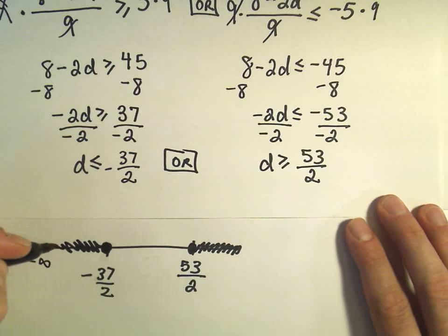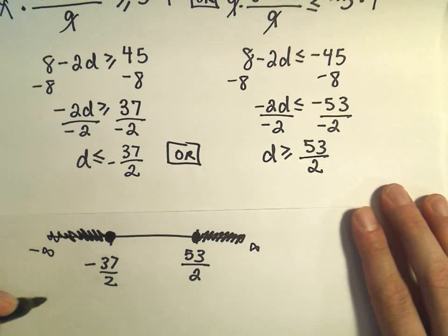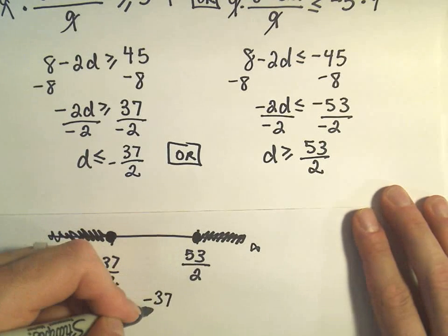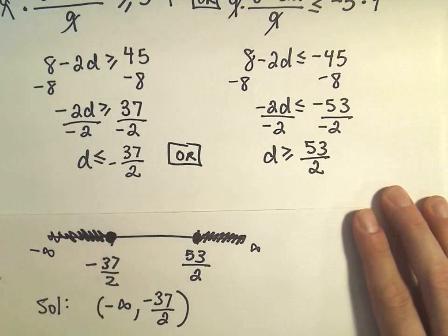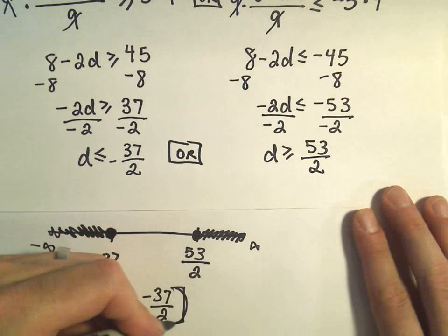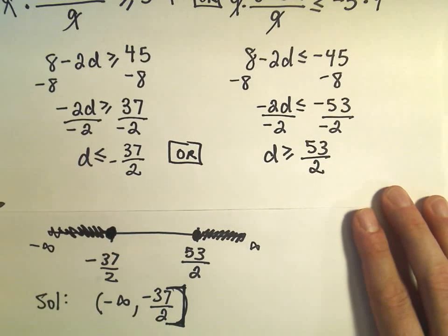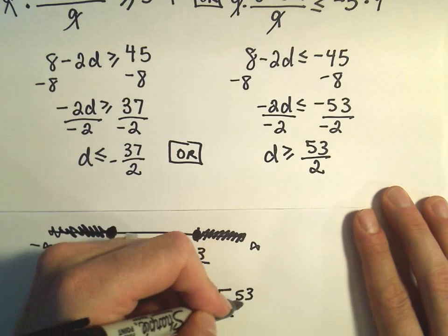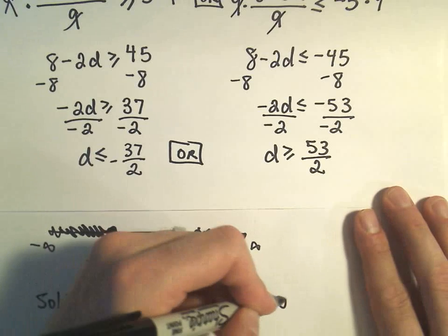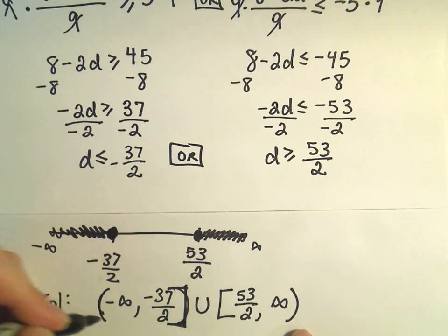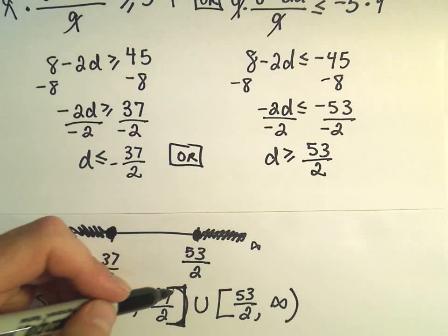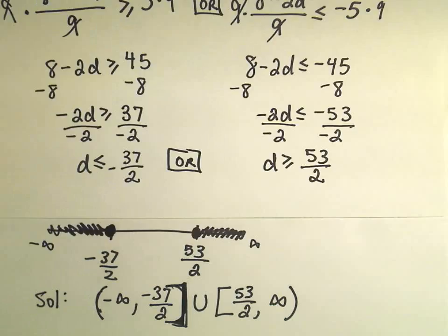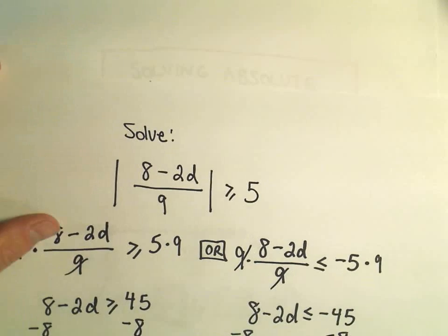So in terms of writing this using interval notation, we can say our solution is the interval negative infinity up to negative 37 over 2, using brackets because we can include it. Or, brackets, 53 over 2 to positive infinity. We always put parentheses around the infinities, but brackets here. And now we've got our solution to our original absolute value inequality.